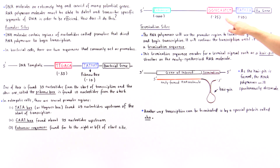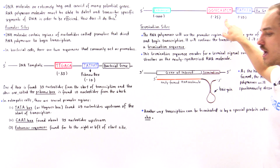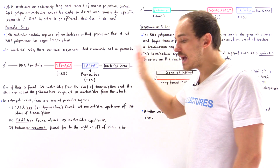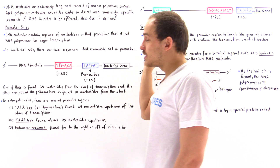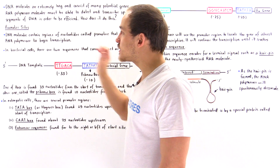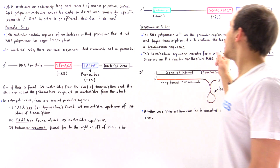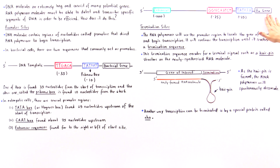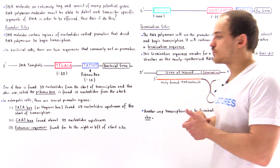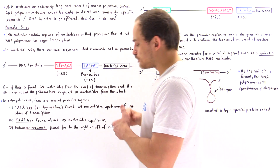The CAAT box is found 75 nucleotides to the left — on the upstream side — of the initial gene where we initiate the process of transcription.